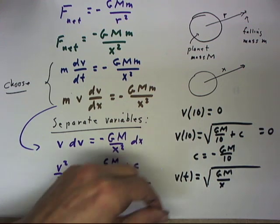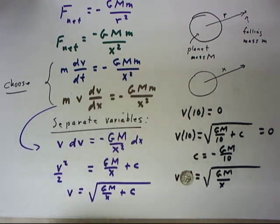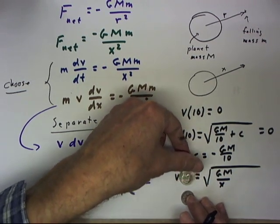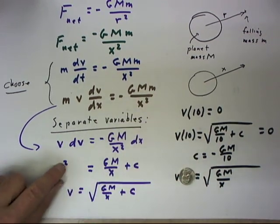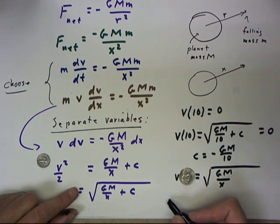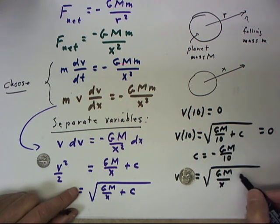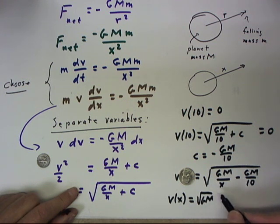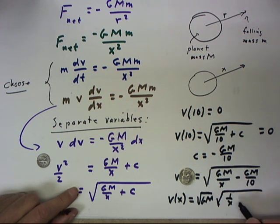So V of X can be written as the square root of GM over X minus GM over 10, which is the square root of GM multiplied by the square root of 1 over X minus 1 over 10.